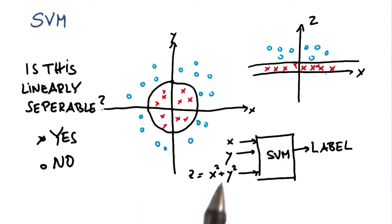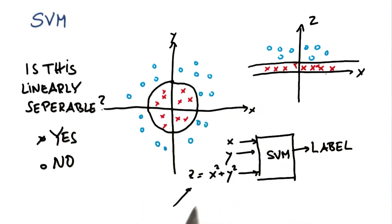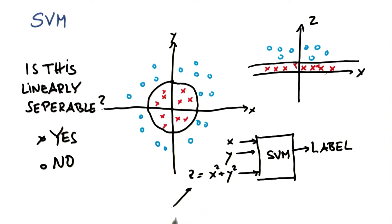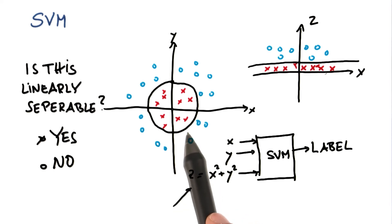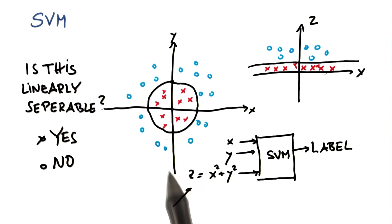So as we added this new feature — and I picked one that I really wanted to pick here — we were able to use a support vector machine to learn a non-linear decision surface in the form of a circle. That is quite amazing.